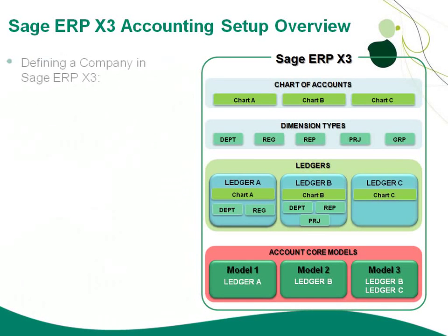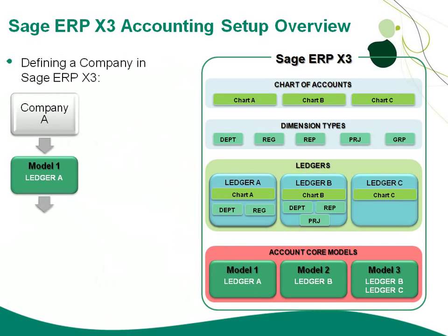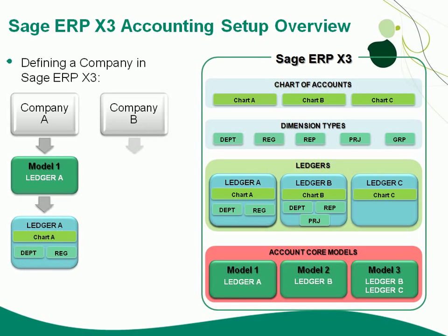When setting up a company in Sage GRP X3, the first thing I define is the account core model. In this case, I'm going to use model 1, which uses ledger A — specifying chart of accounts A for company A, along with the department and region dimension types. If I wanted to set up another company, all I would need to do would be to specify the account core model, and that would define the ledger with the chart of accounts and dimensions being used.